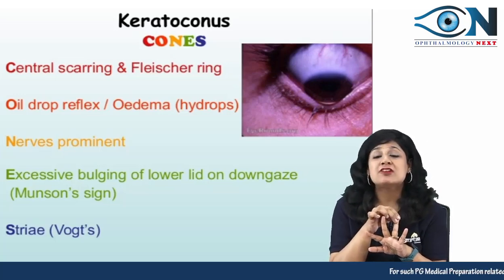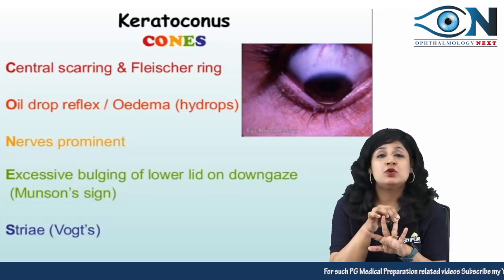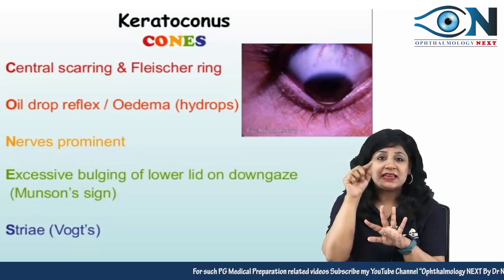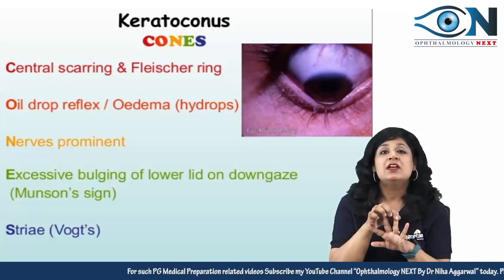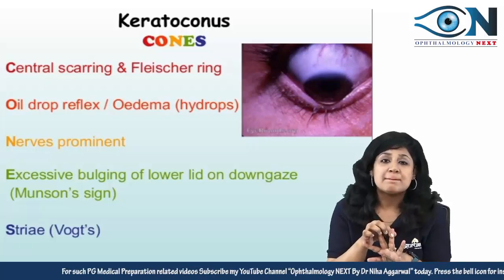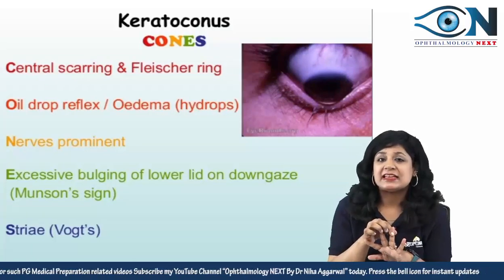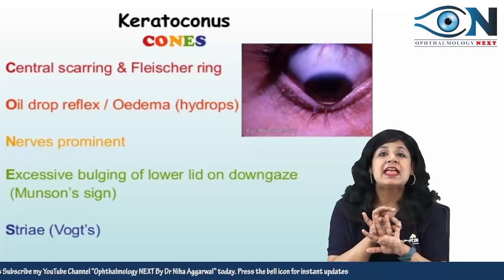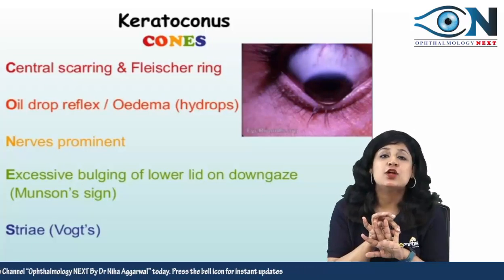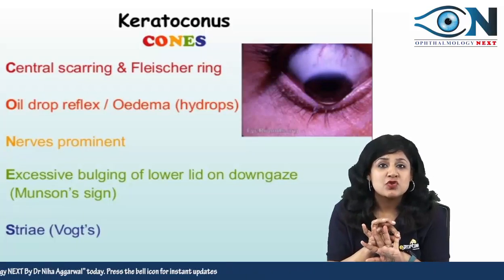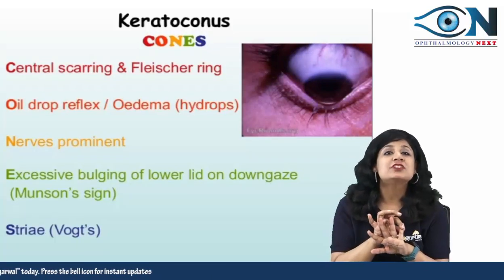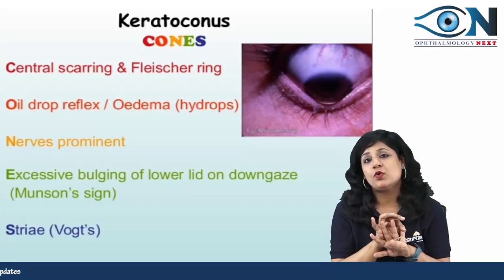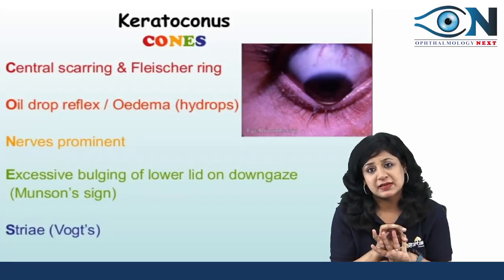We have E for excessive bulging of the lower eyelid — the V-shape indentation called the Munson sign. And then we have S for Vogt's striae, which are visible on slit lamp examination.